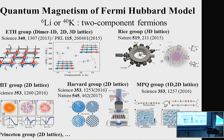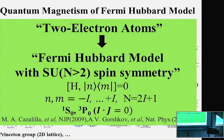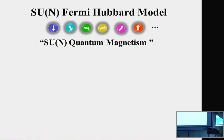In our approach, different from alkaline atoms, we work with two-electron atoms. Therefore, we can study the Fermi-Hubbard model with a more exotic, enlarged spin symmetry of SUN, by using the nuclear spin degrees of freedom of two-electron atoms, which are decoupled from the electron angular momentum in these electronic states. With this SUN Fermi-Hubbard model with N spin components, we can study novel SUN quantum magnetism.